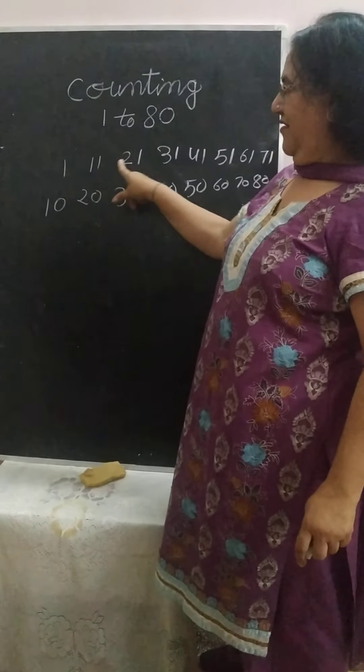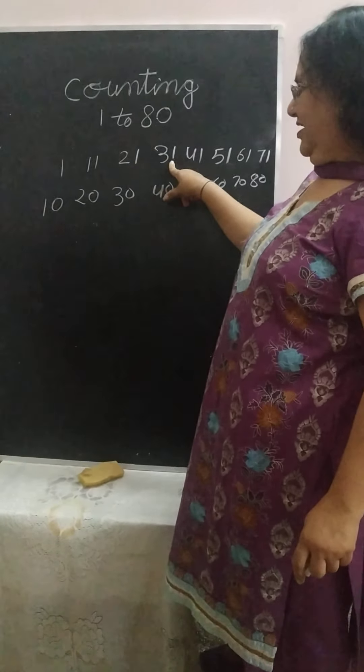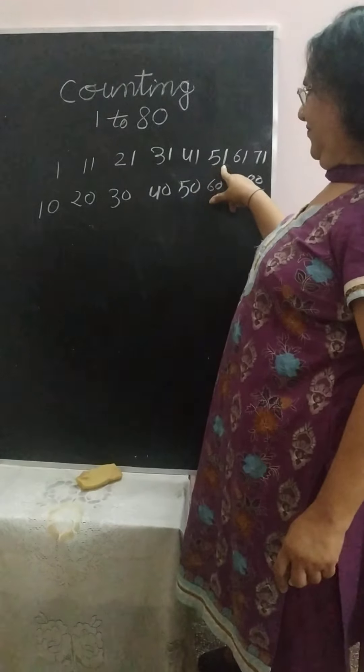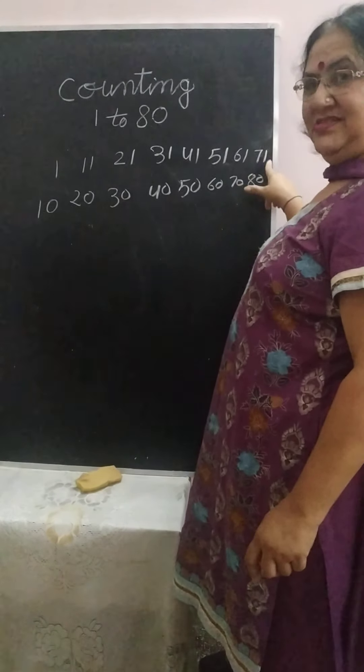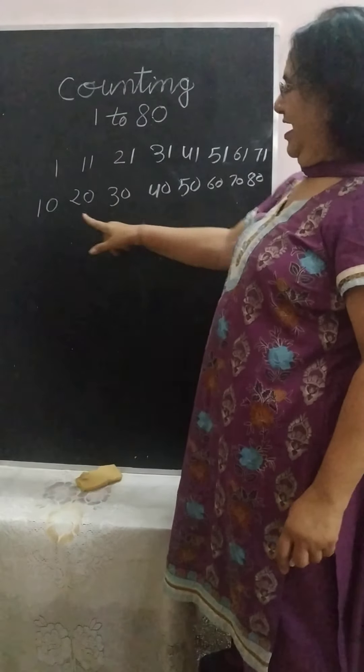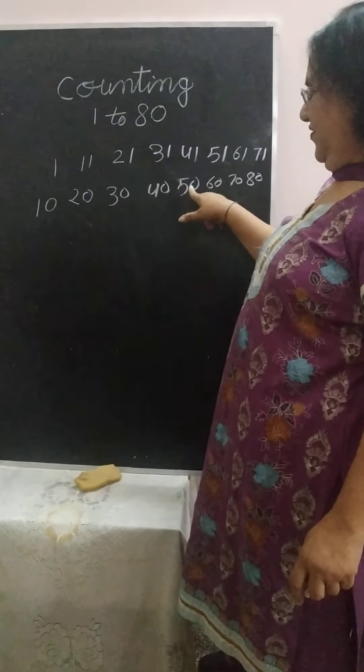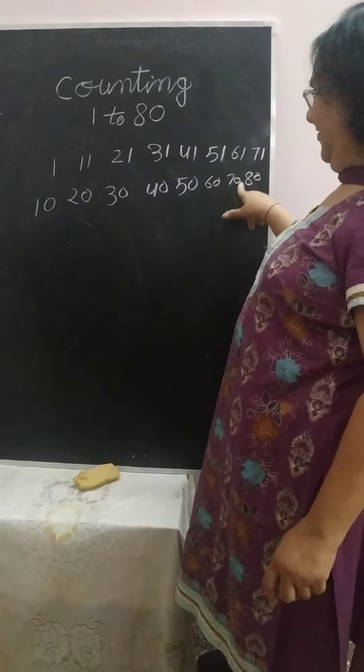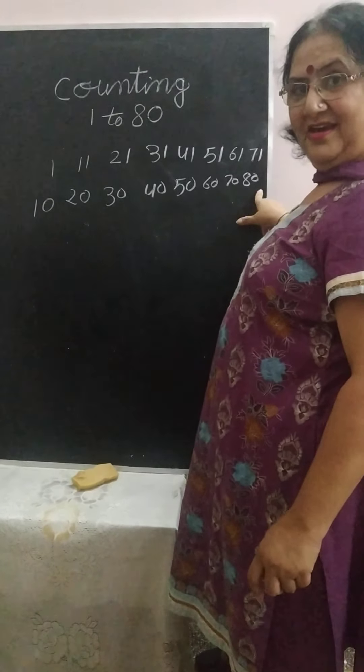Starting numbers: 1, 11, 21, 31, 41, 51, 61, 71. Ending numbers: 10, 20, 30, 40, 50, 60, 70, 80. Okay?